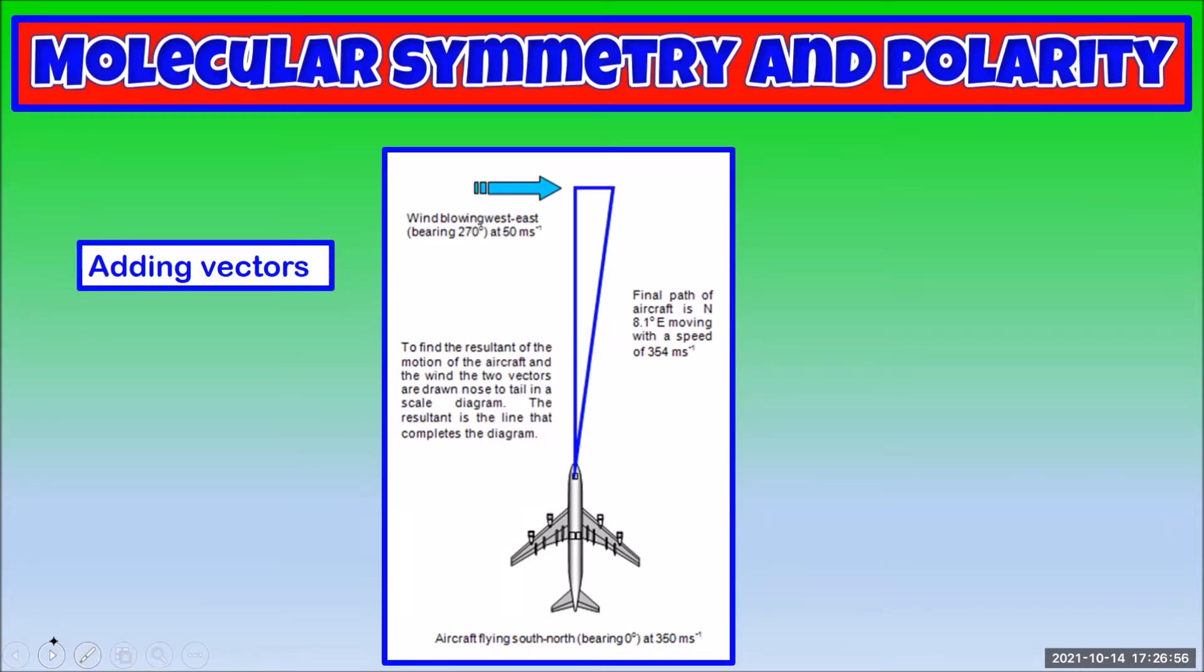We can show this with vectors. We will use the vectors to show the velocity of the plane and the wind. We always add our vectors tip to tail, so to add them we start the wind vector from the tip of the plane vector.